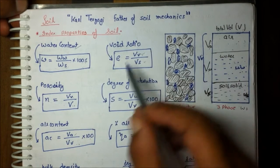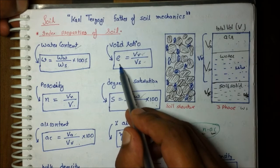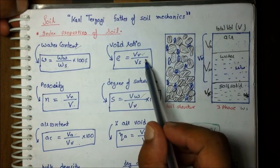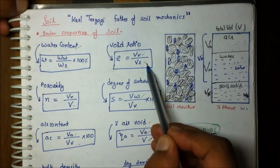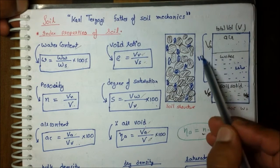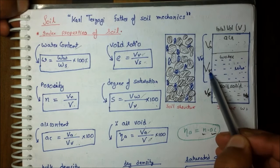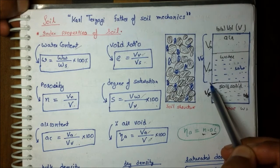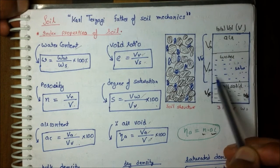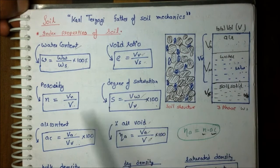Next is void ratio, denoted by E. It is the volume of void upon volume of solid. The volume of void is the volume of air plus the volume of water, together known as the volume of void.